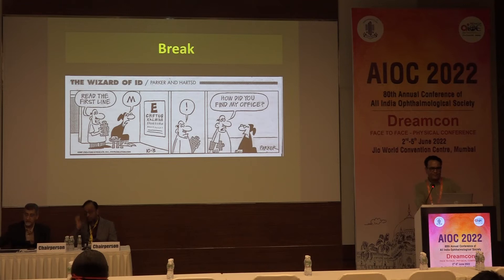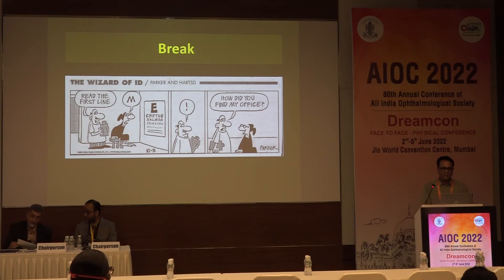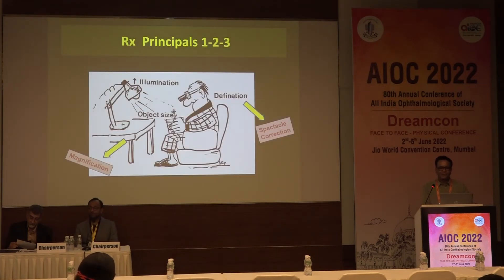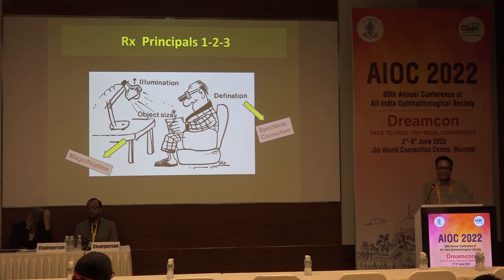This is the end of the first part on epidemiology and definition. Now I start the second part on the principles of treatment of low vision. Low vision devices assist people in making better use of their vision. There are four basic principles to increase vision in low vision patients: first, increase the definition or sharpness of the image by refraction and spectacle correction; second, by increasing illumination; third, by increasing the size of the object either physically or by prescribing magnification; and fourth, the management of glare and contrast.